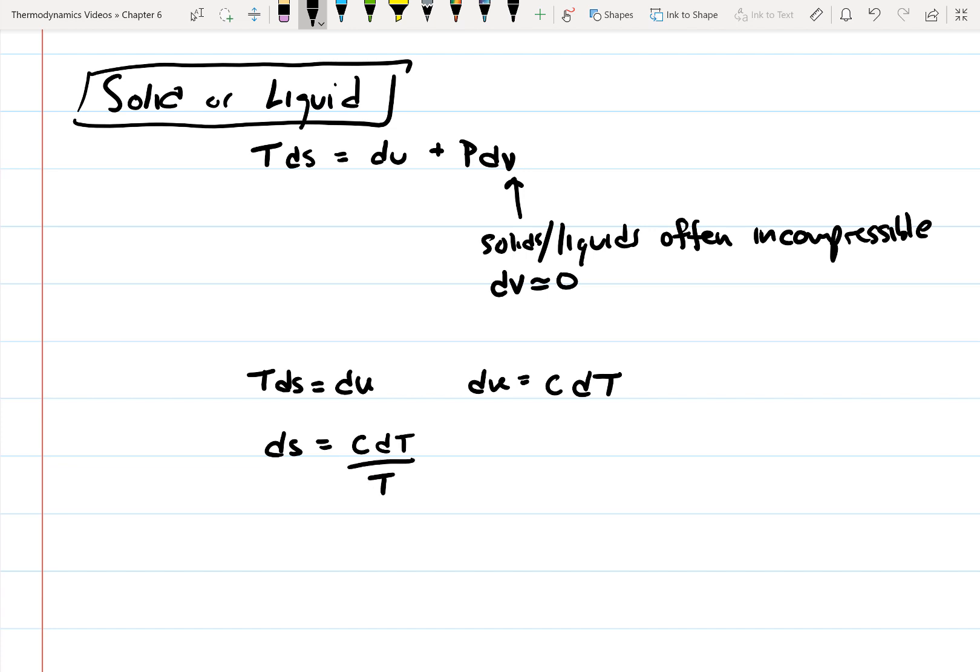So the change in entropy is equal to CdT over T. Now we have an equation that we can use to calculate the entropy. But we have kind of a problem, because in order to integrate C over TdT, we need a relationship between the specific heat and temperature. Basically, we need the specific heat as a function of temperature, which we don't have.